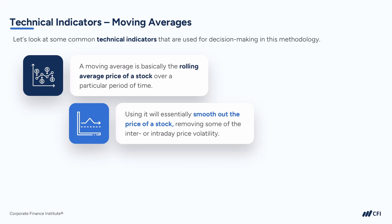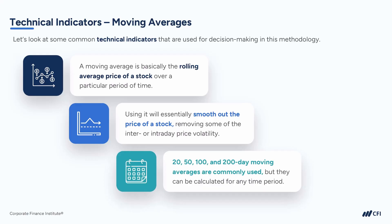Using a moving average will essentially smooth out the price of a stock, which removes some of the intraday price volatility from an analysis. 20-, 50-, 100-, and 200-day moving averages are all commonly used by analysts, but a moving average can be calculated for any time period. If you're analyzing a stock that's extremely volatile but range-bound, it may be helpful to smooth out the price for better decision-making.